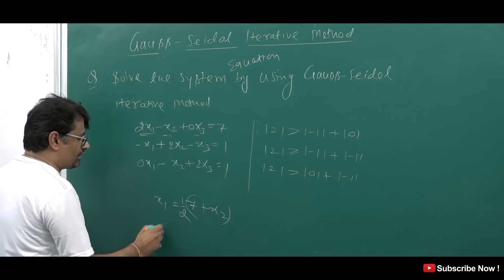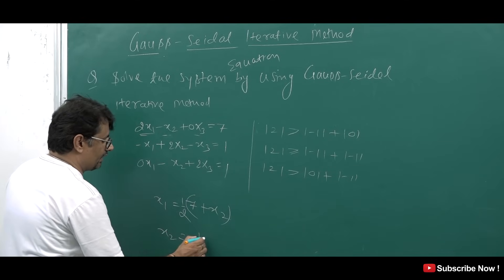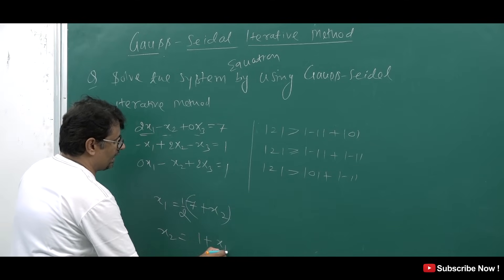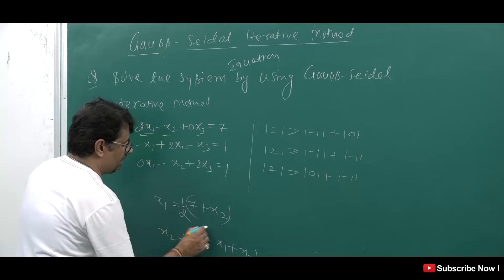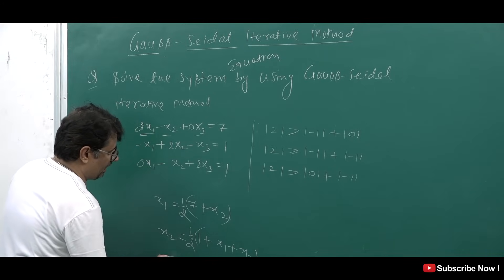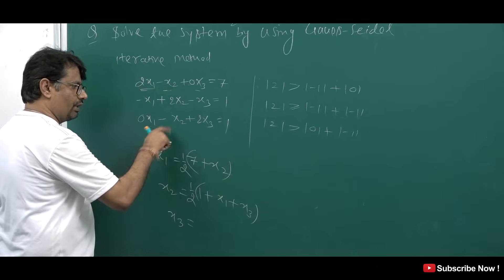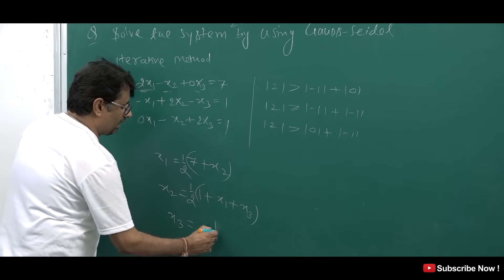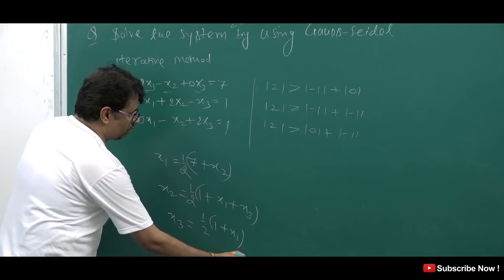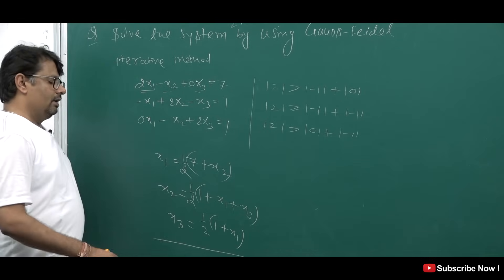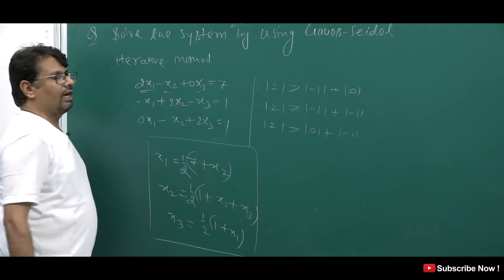Then we keep x2 on one side and take the rest. So x2 equals (1 plus x1 plus x3) divided by 2. And the value of x3 — that will go the same way — so x3 equals (1 plus x1) divided by 2. These are the iteration formulas for x1, x2, and x3.